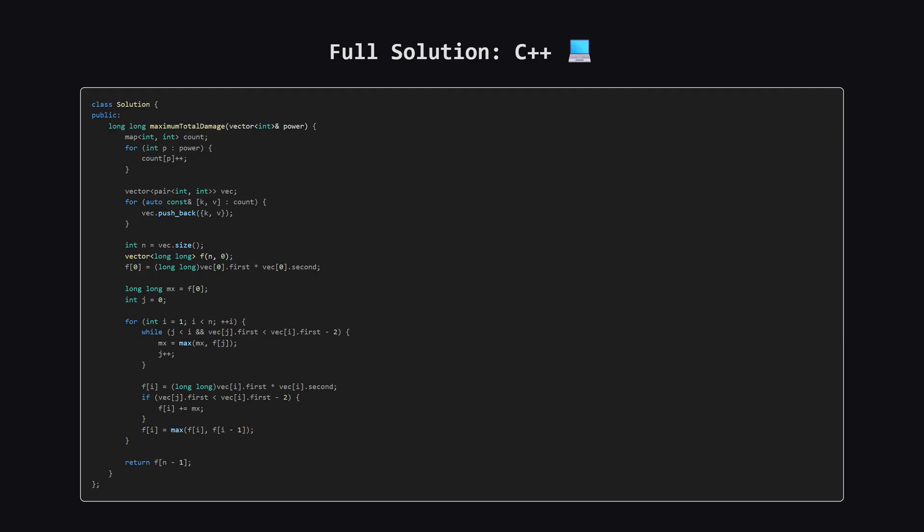Next up, here is the C++ version. We use a std::map which keeps keys sorted automatically, making the initial step very convenient. The dp logic with the two pointers i and j remains the same. Feel free to pause and review the code.